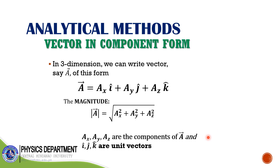To generalize this to three dimensions, we can write vector A in component form as AX i-hat plus AY j-hat plus AZ k-hat. AZ is the Z component of vector A. In three dimensions there are three components, so we add this term for the Z axis. The magnitude is just the square root of AX squared plus AY squared plus AZ squared. Here, AX, AY, and AZ are the components of A, and i-hat, j-hat, k-hat are the unit vectors — k-hat is for the Z axis.